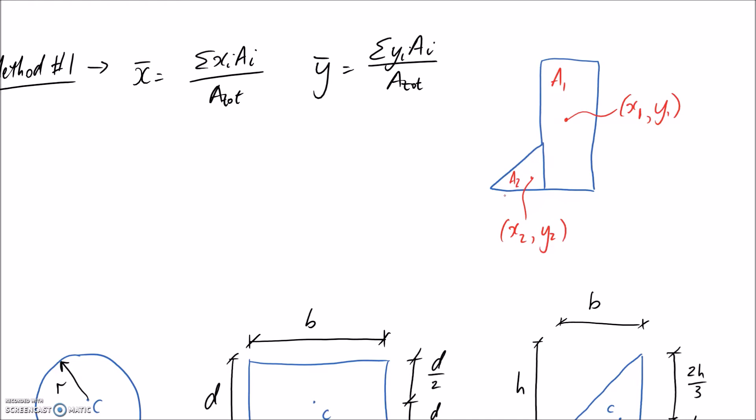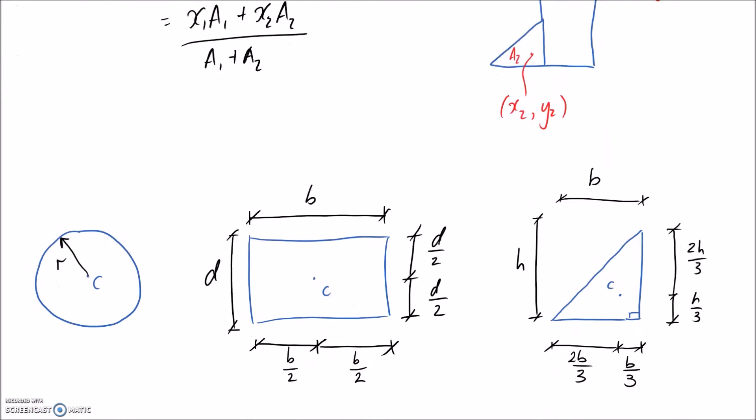And then putting them into this equation. So if you have just two shapes making up your big one, it's going to be x1 a1 plus x2 a2 divided by the total area. So a1 plus a2. And of course, if you have other ones, you just continue adding them on the end. So that's the first method. It's really only applicable when you have simple shapes that you already know the centroids of, just like the circle, the rectangle and the triangle.